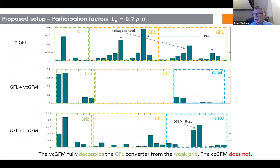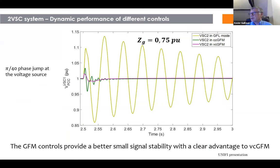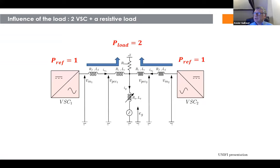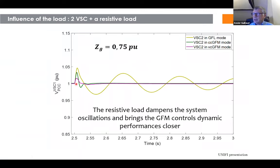Simulation results at the stability limit confirm: grid-following is unstable, VCGFM is very stable, and CCGFM is at the boundary. We also applied a 40-degree phase jump at the voltage source. Adding a resistive load damps the system as expected, and in that case the behaviors of VCGFM and CCGFM are closer together — the resistive load tends to bring the two GFM control dynamics closer.